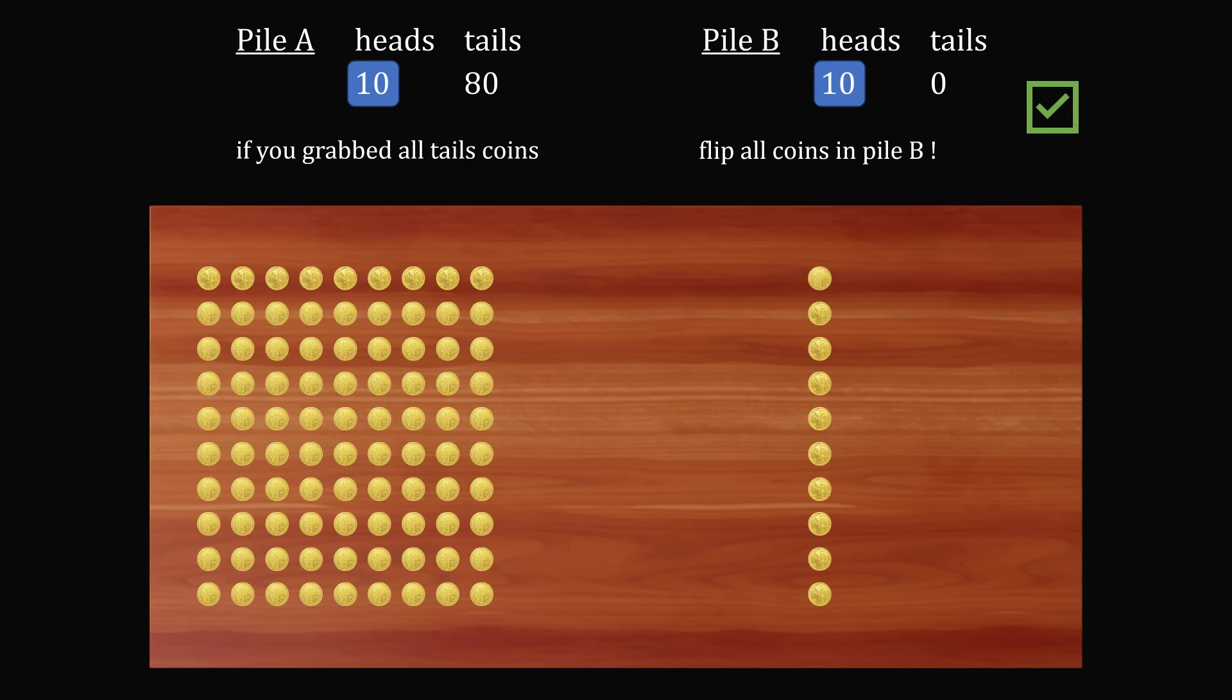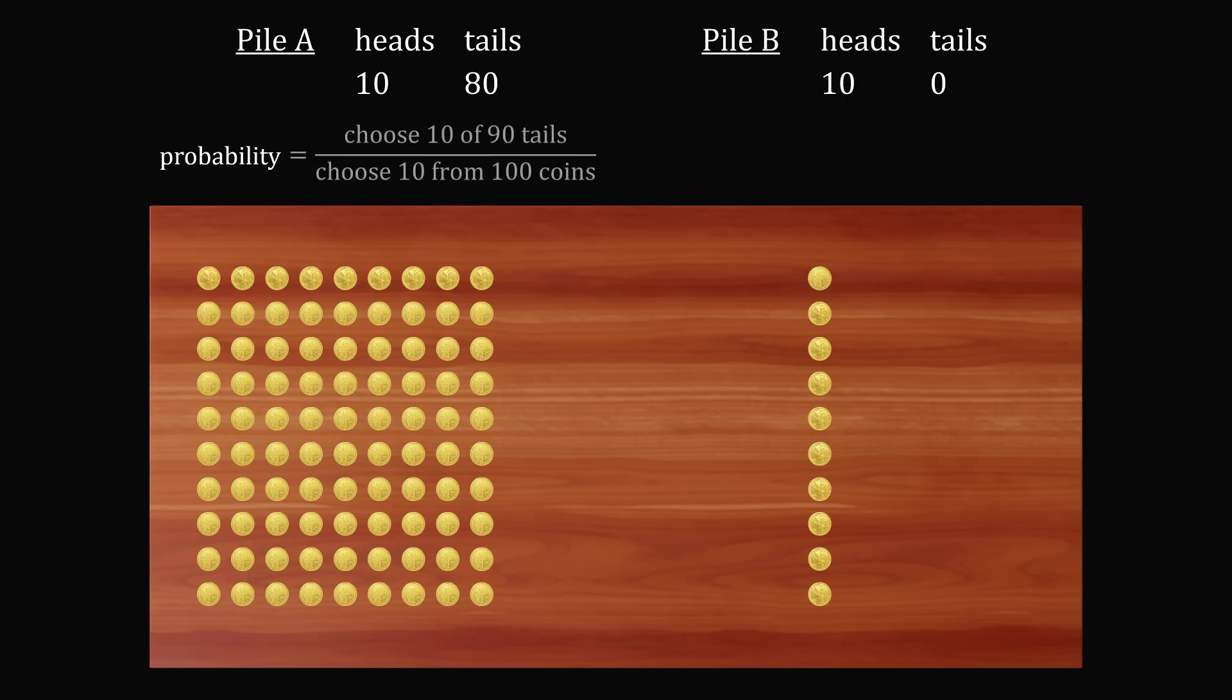But once again, we were depending on random luck. So let's see the probability this would happen just by chance. We need to calculate the number of ways to choose 10 of the 90 tails, divided by the number of ways to choose 10 coins from 100 coins. We use binomial coefficients and this works out to be approximately 0.33. So just by random chance, about a third of the time, if you grab 10 coins, they're all going to be tails, you move it to the other side and flip them over and you'll have a solution.